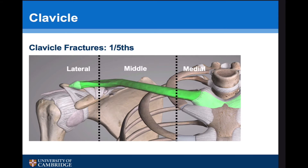However in practice it's much better to divide the clavicle into fifths: the lateral fifth, the medial fifth and the middle three fifths. The reason for this is that the AC joint with its coracoclavicular ligaments and the SC joint with its ligaments mean that fractures in these areas are relatively uncommon and are treated differently. So we're predominantly going to concentrate on middle third fractures.